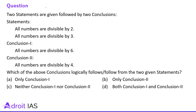The next question says: two statements are given followed by two conclusions. Statement one: all numbers are divisible by 2. Statement two: all numbers are divisible by 3. Conclusion one: all numbers are divisible by 6. Conclusion two: all numbers are divisible by 4. A number which is divisible by 2 and 3 simultaneously is certainly divisible by 6.